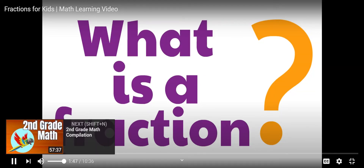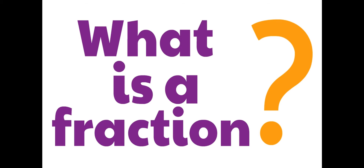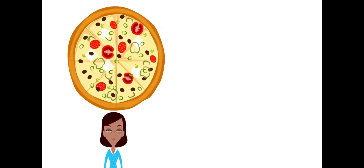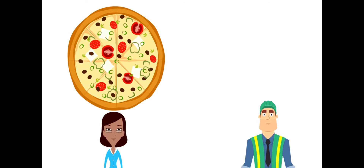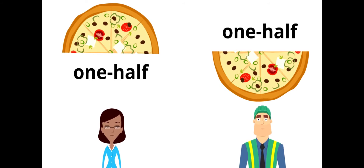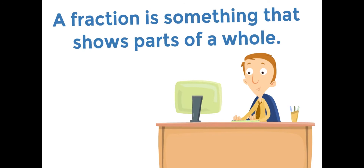What is a fraction? When we say the word fraction, what do we mean? Well, a fraction is something that shows parts of a whole. Let's say there's a lady named Cindy — Cindy has a pizza. Her friend Chomsky arrives and he's a little bit hungry, so maybe Cindy isn't going to eat the whole pizza. Maybe they're going to split it. They split the pizza in half — each of them get one half. Remember, a fraction is something that shows parts of a whole.